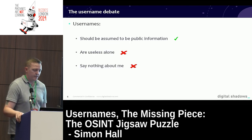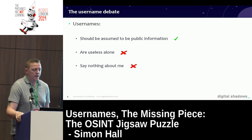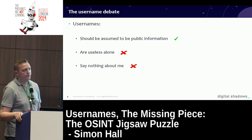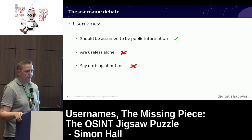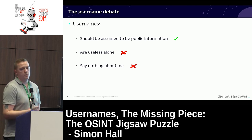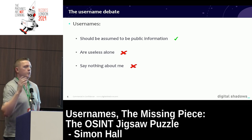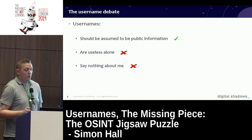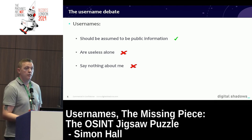So the username debate — the main talk is around usernames. Whenever I discuss usernames and their relevance in open source intelligence, there's a lot of comeback from people saying it's pointless. One argument is that usernames should be assumed to be public information — 100% agree. We've all got Twitter, Instagram, whatever, where we want those likes and retweets and want people to share our information. So the username should be public.